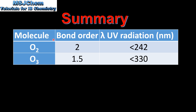Here we have the molecule, the bond order, and the wavelength of UV light that causes the bond to dissociate. Oxygen O2 has a bond order of 2 and a wavelength of less than 242 nanometers. Ozone has a bond order of 1.5 and is dissociated by a wavelength of less than 330 nanometers.